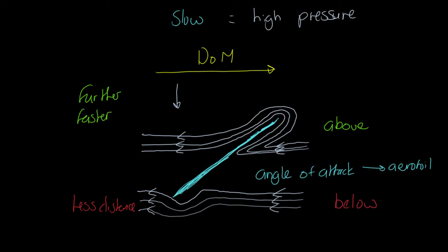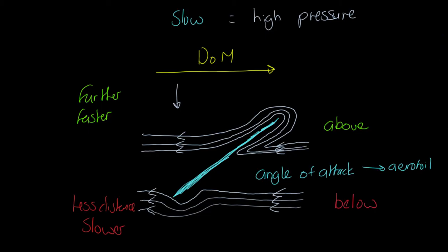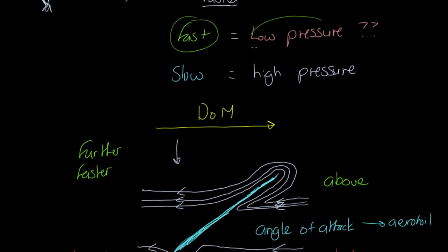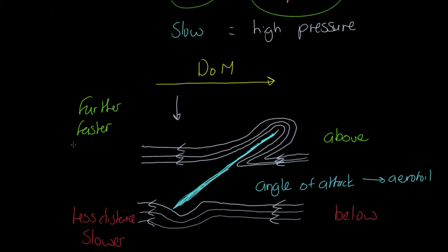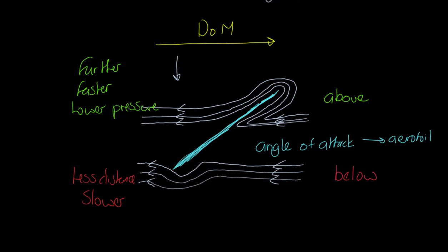So what does that mean? The air above has to travel further, which means it has to travel faster. The air below doesn't have to travel so far, so it travels slower. This is because it's the javelin that's moving and displacing the air — all the air has to arrive at the back point at the same time. If the air is moving faster at the top, from the Bernoulli principle we know fast moving air equals lower pressure. So we now have lower pressure above the javelin and higher pressure below.